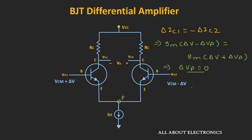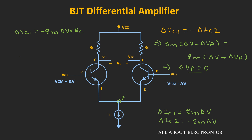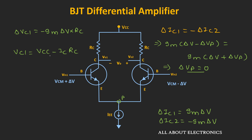Since ΔVp = 0, we can say ΔIc1 = Gm × ΔV and ΔIc2 = −Gm × ΔV. Since the collector voltage Vc1 = Vcc − IC × RC, with a change in collector current ΔIc, the change in voltage ΔVc1 = −Gm × ΔV × RC. Similarly, ΔVc2 = +Gm × ΔV × RC. The differential output voltage Vo2 − Vo1 = 2 × Gm × ΔV × RC.